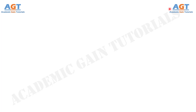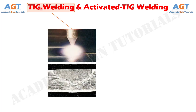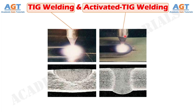Welcome to Academic Game Tutorials. In this video, we will look into the differences between TIG welding and activated TIG welding. Gas tungsten arc welding, popularly known as tungsten inert gas welding or TIG welding, is one fusion welding process where an arc is established between the non-consumable tungsten electrode and the base plates. Activated tungsten inert gas welding is one variant of conventional TIG welding process where a thin layer of appropriate activating flux is applied on the base plates prior to welding.